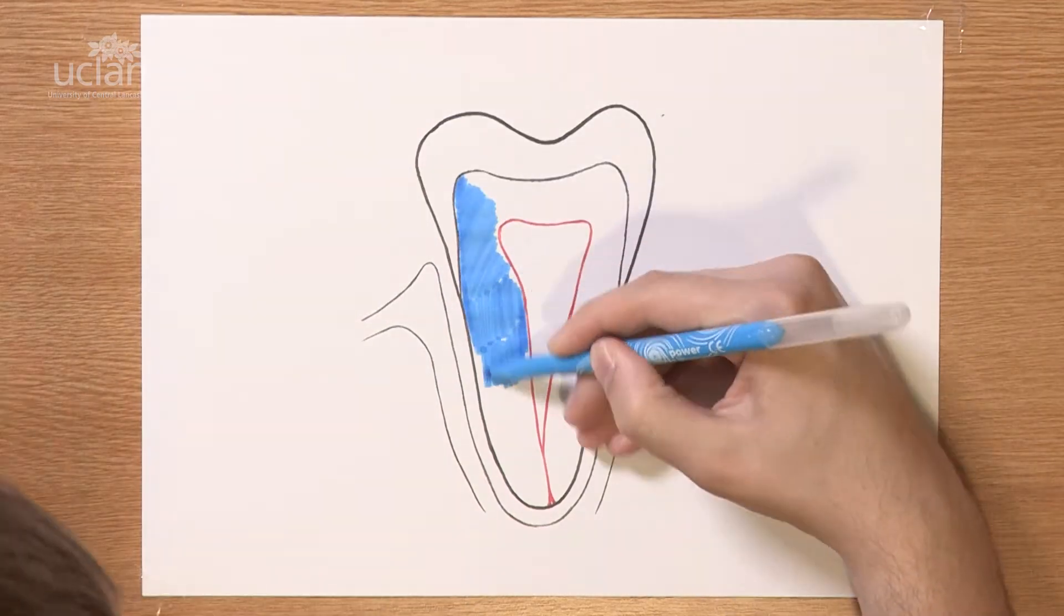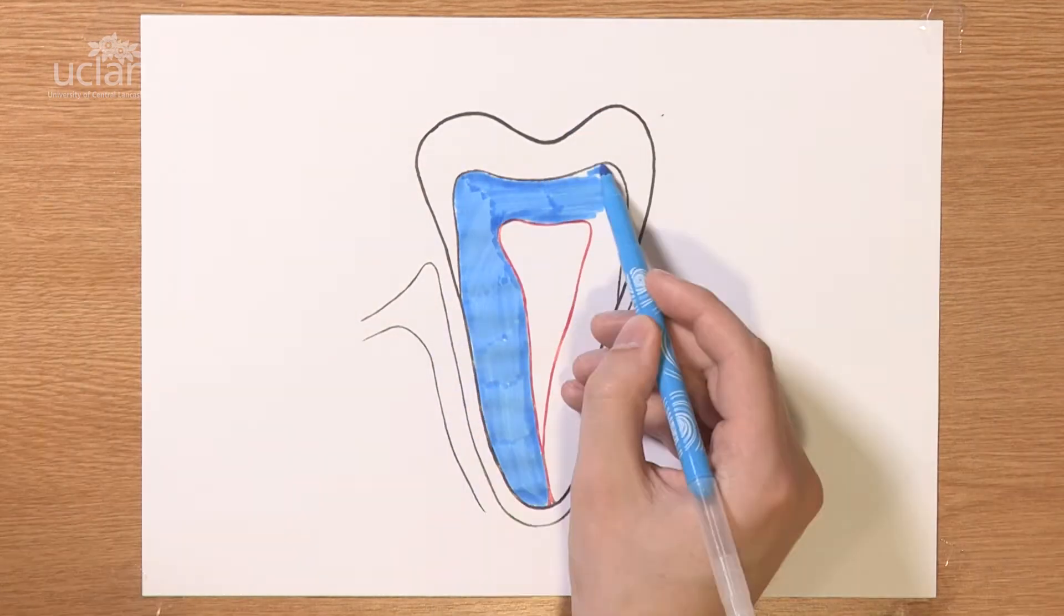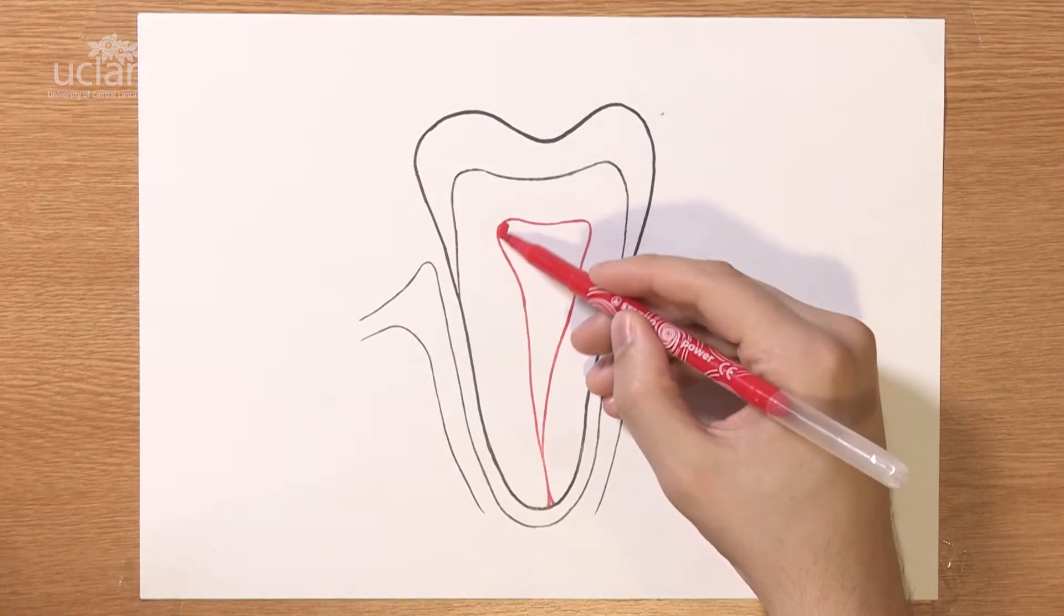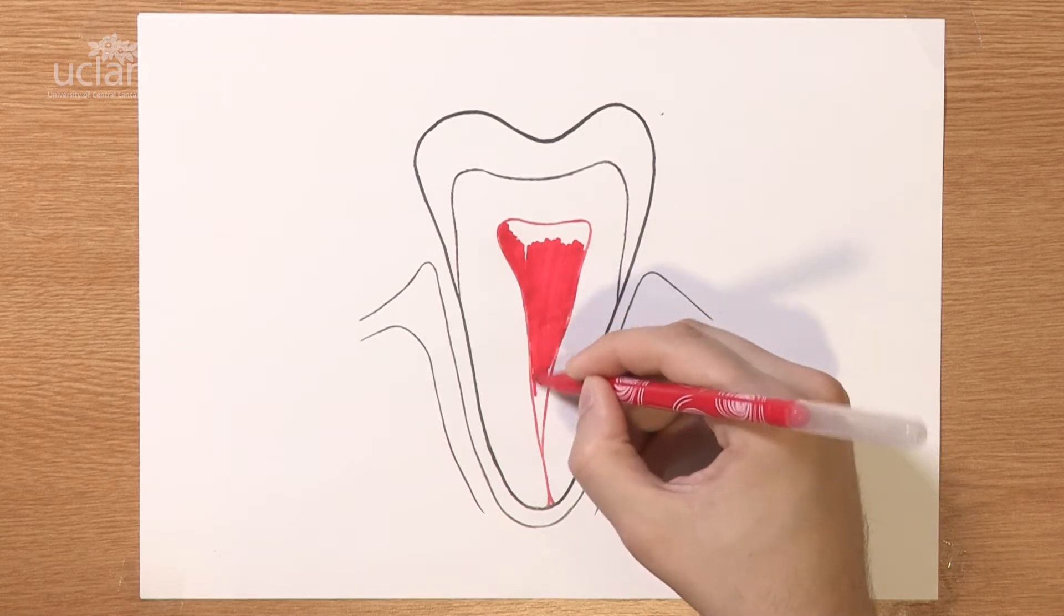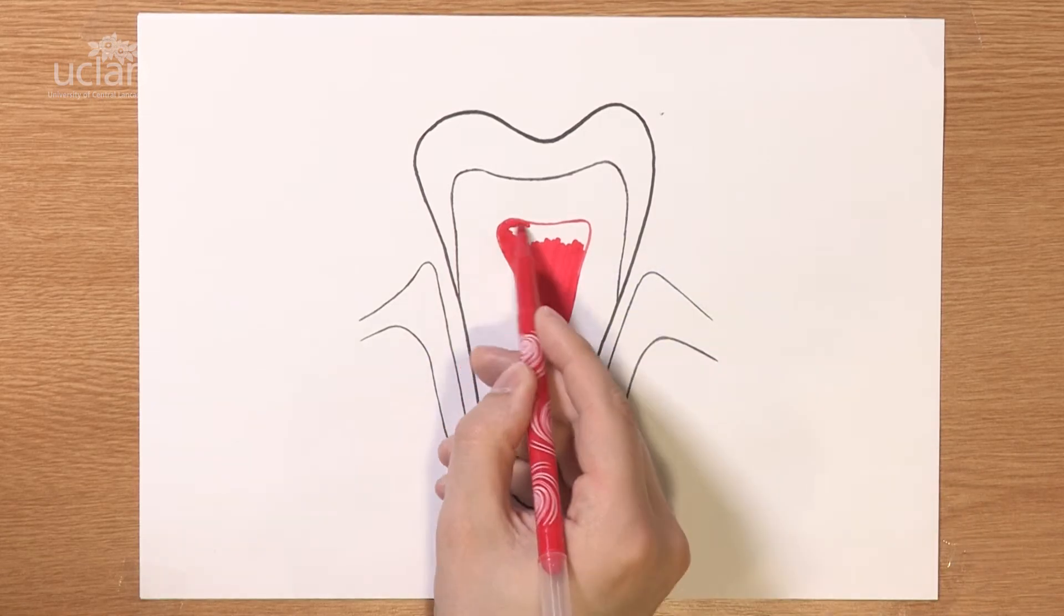the enamel, being the hardest. Next is the dentine, which is slightly softer. And the softest part is the pulp and nerve in the middle. A healthy nerve is found in a canal that extends into the root of the tooth.